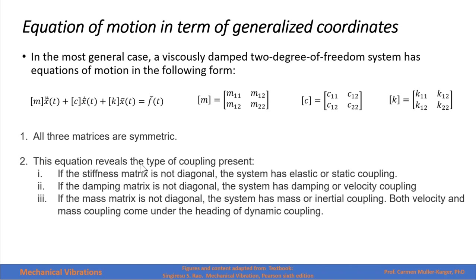This equation reveals the type of coupling present in the system. If the stiffness matrix is non-diagonal, the system has elastic or static coupling. If the damping matrix is not diagonal, the system has damping or velocity coupling. If the mass matrix is not diagonal, the system has mass or inertial coupling. Both velocity and mass couplings come under the heading of dynamic coupling.